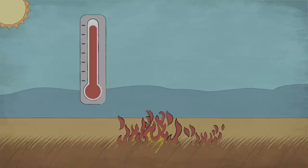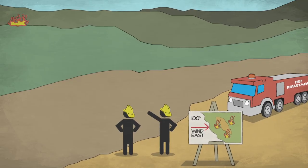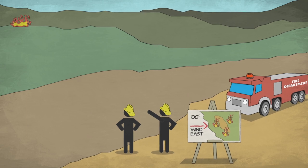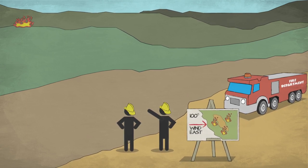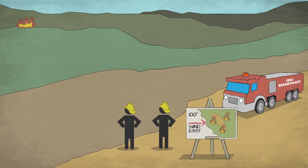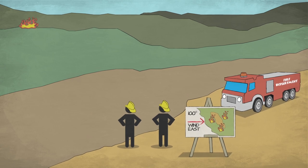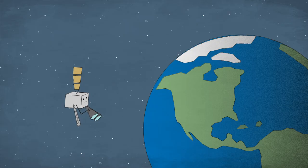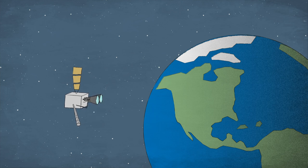But before taking action, firefighters need to understand where a fire is and how exactly these environmental and weather conditions will affect the fire. With a view from high above Earth, weather satellites such as NOAA's GOES satellites can provide information to help firefighters and the rest of us stay safe.